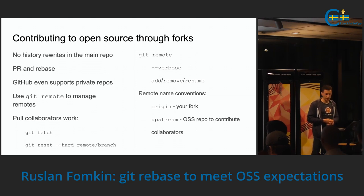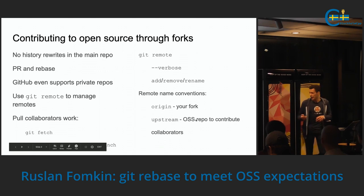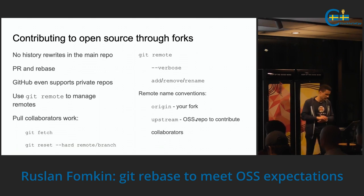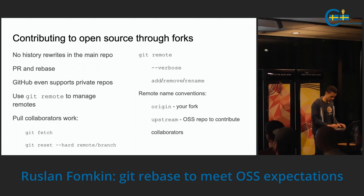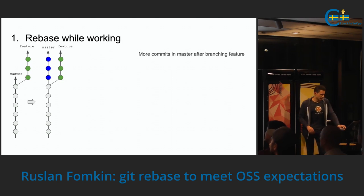It's also nice to have collaborators working, for example for review or working together on a project. In such a case, one of the suggestions is to use git fetch and then git reset --hard to the collaborator's branch. So let's look now at actually working with commit history and starting to rewrite.